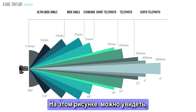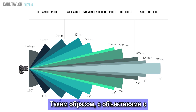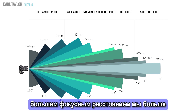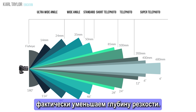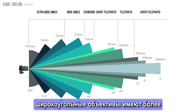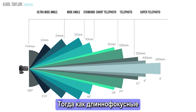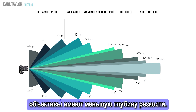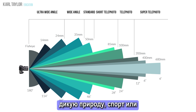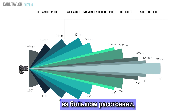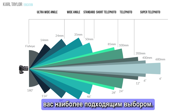In this graphic you can see that as we increase focal length, the angle of view is decreased. With longer focal length lenses we magnify the subject more, and in doing so we actually reduce depth of field. Wide angle lenses have the appearance of a more naturally large depth of field, whereas long telephoto lenses have the appearance of a shallower depth of field. So if you choose to shoot wildlife, sports, or any subject at a great distance, a longer focal length would be your most suitable choice.